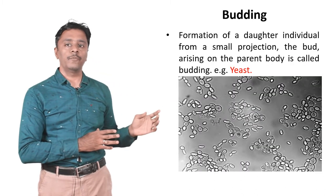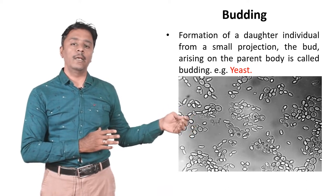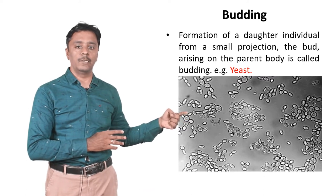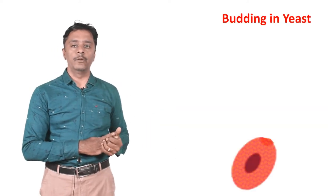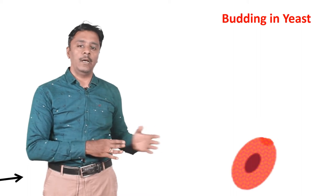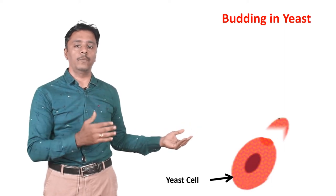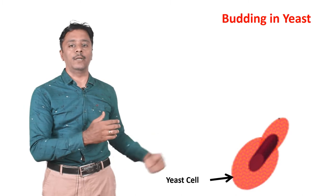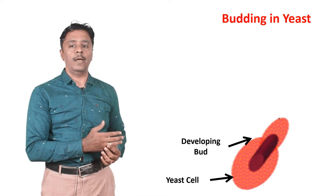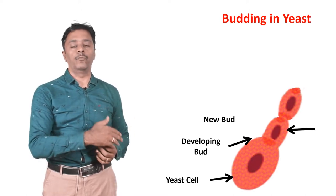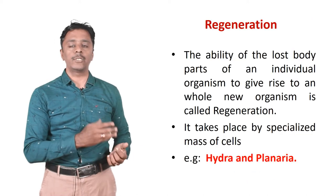The next one is budding. Formation of a daughter individual from a small projection on the parent body is called budding. Example: yeast. Small buds arise as seen in the microscope. From the parent yeast cell, new yeast will form where we can see the elongated developing bud. A new cell develops, and new buds form simultaneously to form a chain of buds. When formed this way, it is called budding in yeast.